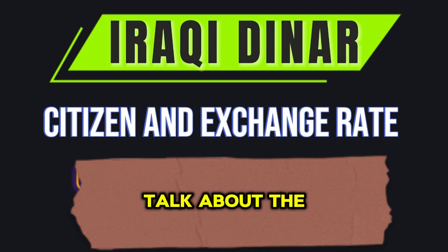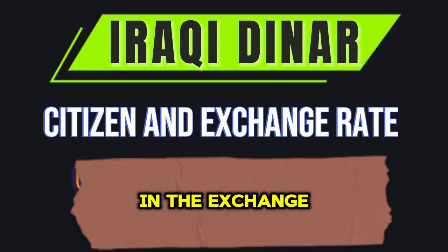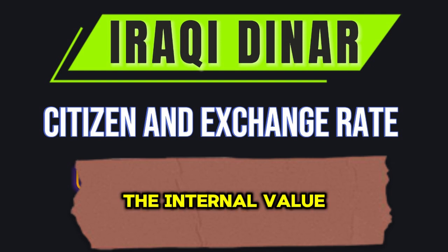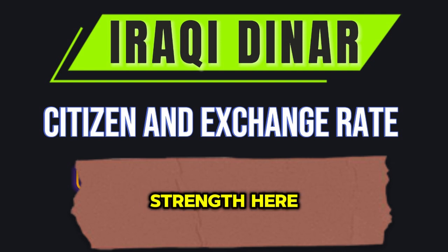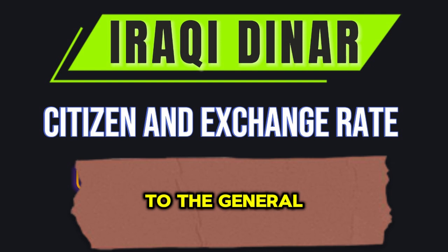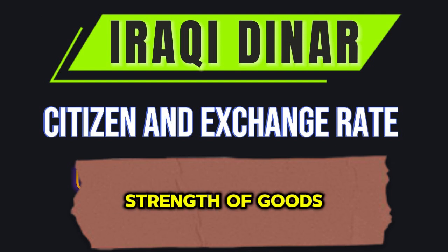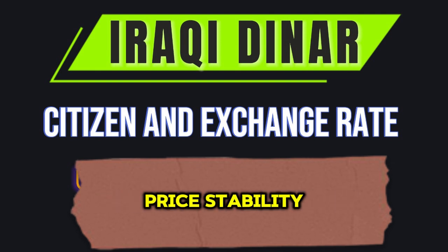On the other hand, the value and stability of the currency are linked to the internal value of the national currency itself. Just as we talk about the stability of the currency in the exchange rate and its exchange power with other currencies, the internal value of the currency is the other side of currency stability and strength. Here, the value of the national currency is directly linked to the general price level, which means the purchasing power of goods and services expressed in money.